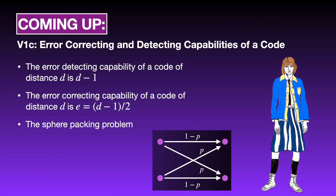In video lecture V1C, we'll determine the error-detecting capability and error-correcting capability of a code. We'll see that these capabilities can be described very concisely in terms of the distance of the code. We'll also see how the existence of codes with certain parameters can be phrased as a sphere-packing problem that is widely studied in some branches of combinatorics.